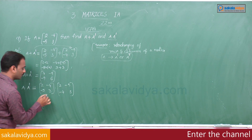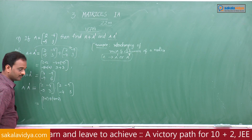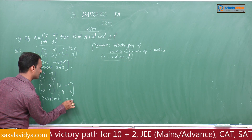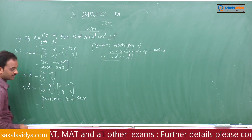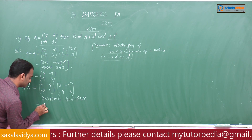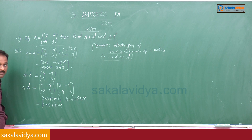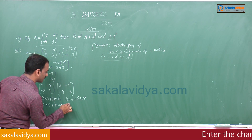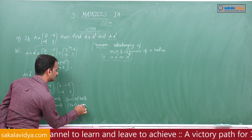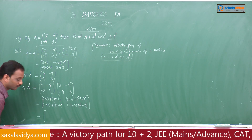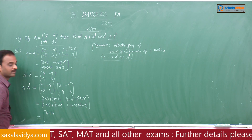Computing the product: first row, first column: 2×2 + (-4)×(-4) = 4 + 16 = 20. First row, second column: 2×(-5) + (-4)×3 = -10 + (-12).